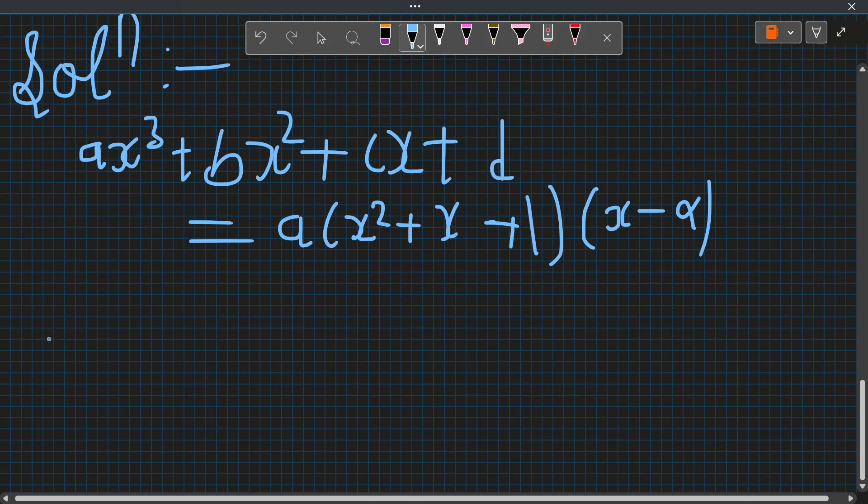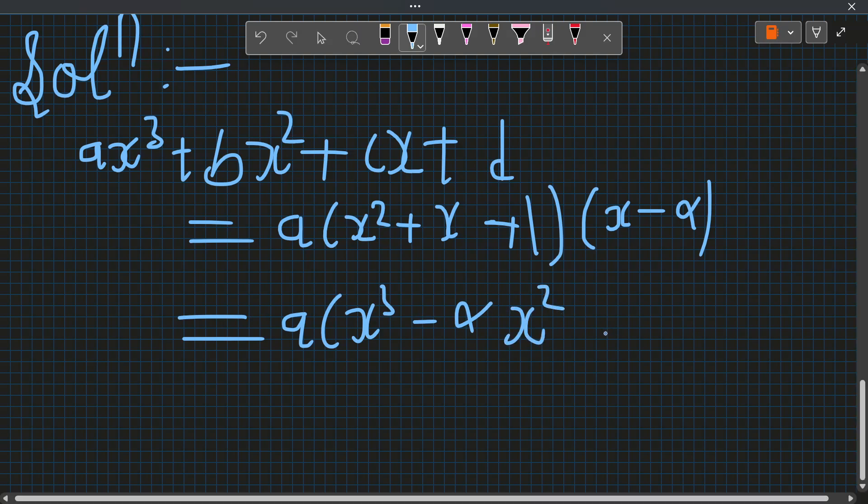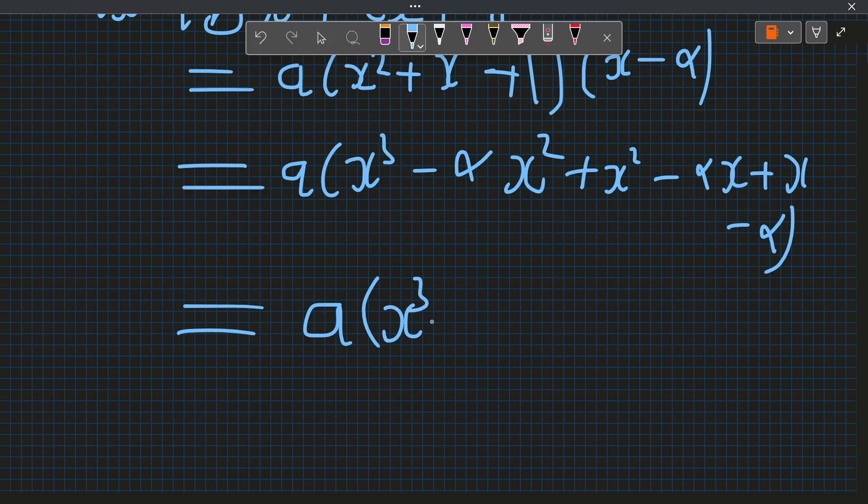Now let's open the bracket, so we will get a times x³ - αx². A times x² plus x² minus αx.